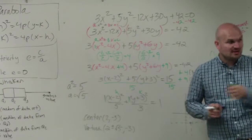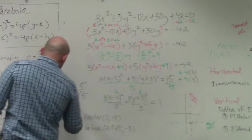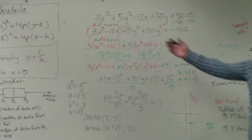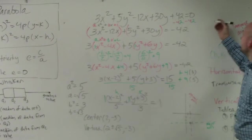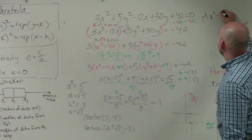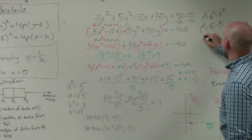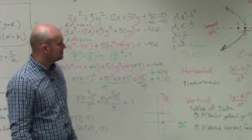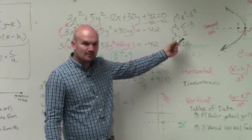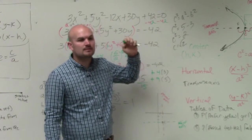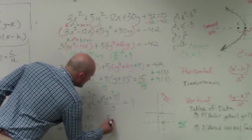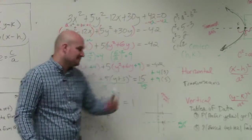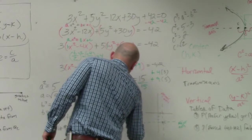The foci also lie on the major axis. We know A squared equals 5 and B squared equals 3. So C squared equals A squared minus B squared: 5 minus 3 equals 2. Therefore C equals the square root of 2. C represents the distance from the center to the foci. Again the foci go left and right, so the foci are (2 plus or minus the square root of 2, negative 3).